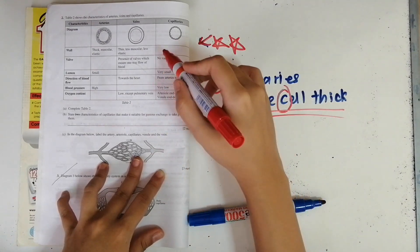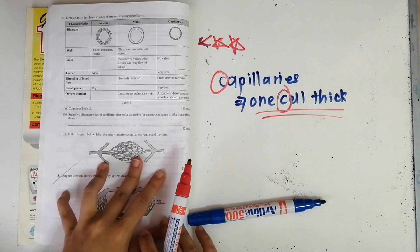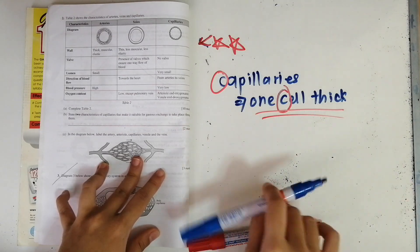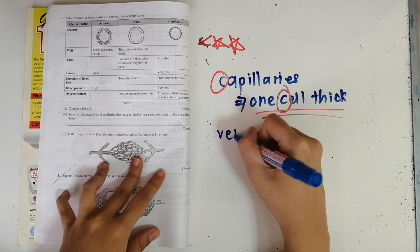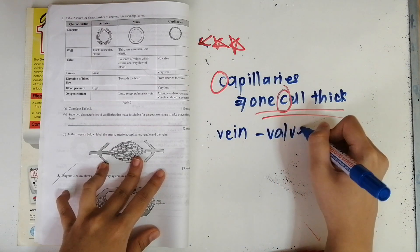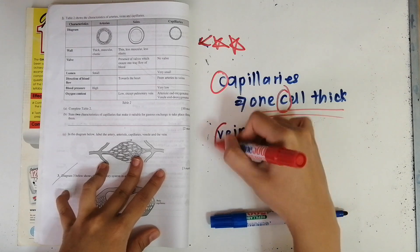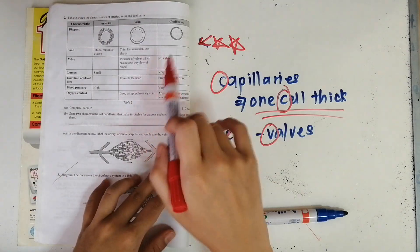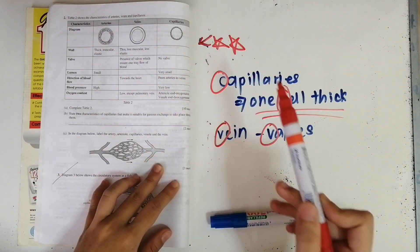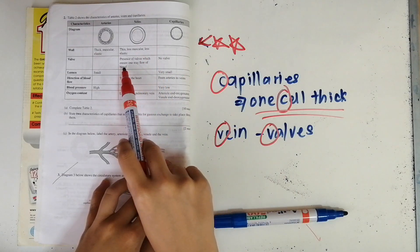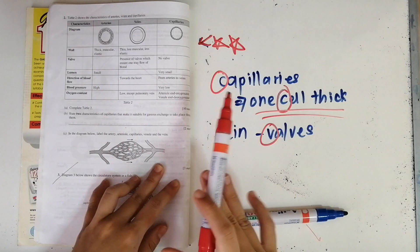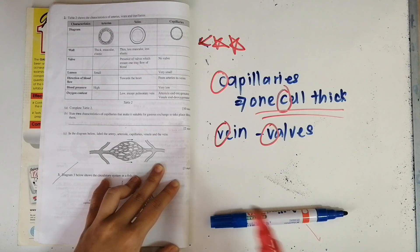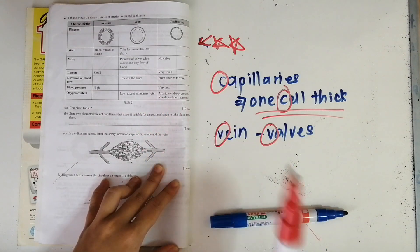Now we move on to valves. Valves are a characteristic feature of veins — and that's easy to remember: Veins have Valves, V and V, as simple as that. In capillaries there are no valves at all. Valves in veins ensure one-way flow of blood, so that blood flows in one direction only. This can be asked as a separate question in subjective or MCQ paper one.